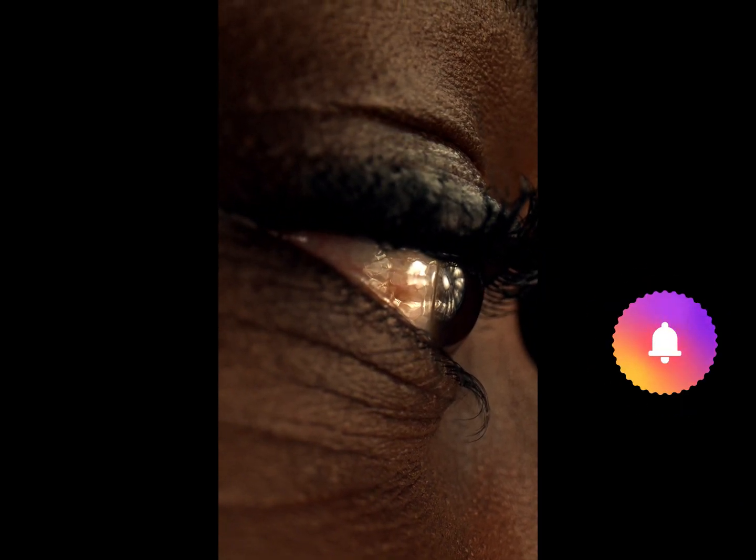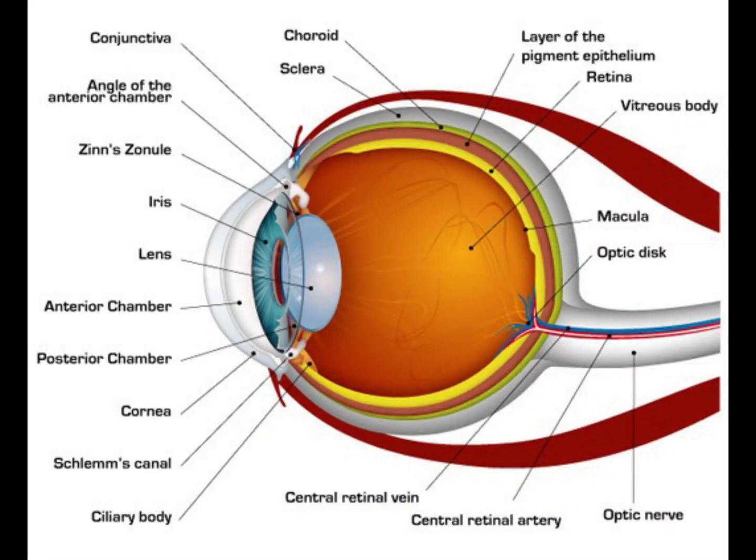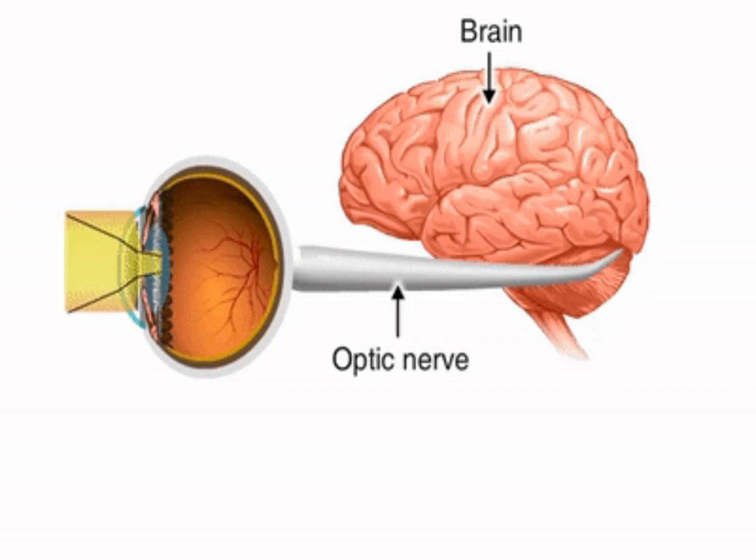Light rays enter the eye through the cornea, the clear front window of the eye. The cornea's refractive power bends the light rays so that they pass freely through the pupil, the opening in the center of the iris through which light enters the eye. The iris works like a shutter in a camera, with the ability to enlarge and shrink depending on how much light is entering the eye.